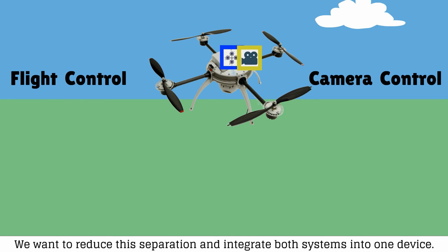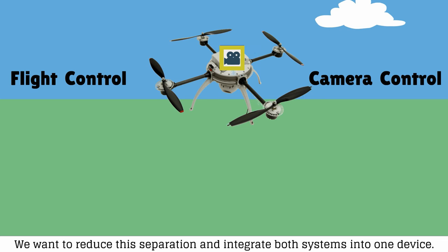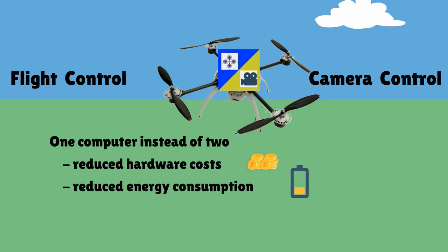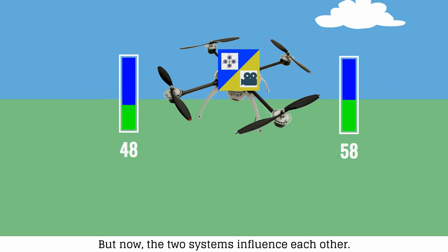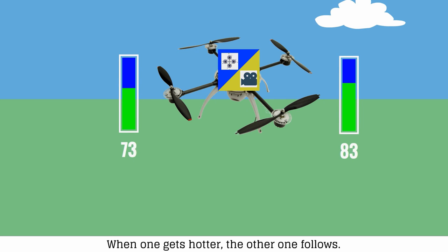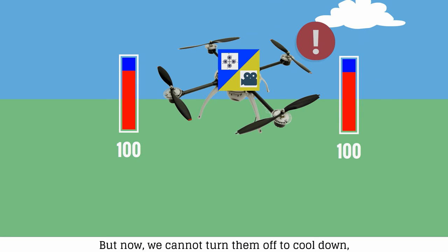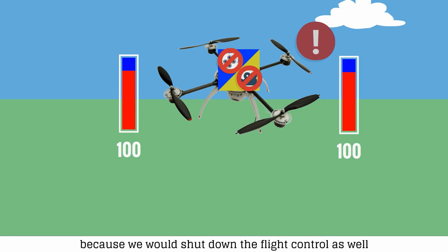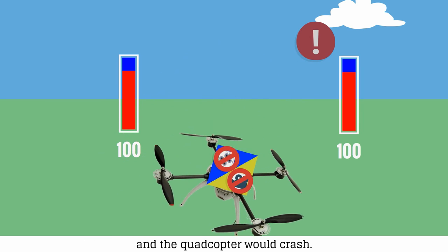We want to reduce this separation and integrate both systems into one device. With this, we are able to use one modern and more powerful computer instead of two. This allows reduced hardware cost, energy consumption and weight. Now we have a problem: the two systems influence each other. When one gets hotter, the other one follows. And when one gets too hot, the other one does too. But now we cannot turn them off to cool them down, because we would shut down the flight control as well and the quadcopter would crash.